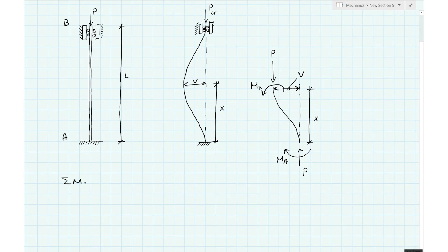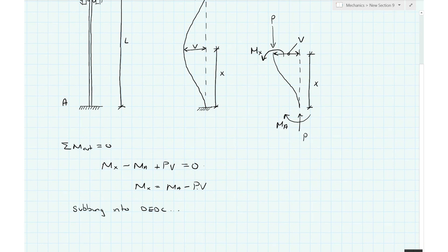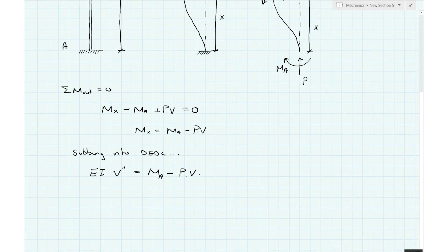So the first thing we want to do is determine an expression for the internal bending moment in the column. In order to do that, I will take the sum of the moments about the cut. I know that must equal zero. So in doing that, I have Mx minus Ma plus P times v must equal zero, and so that means that Mx must equal Ma minus Pv. We solve this straight into our differential equation and we end up with EI times v prime prime, second derivative of v, and that's equal to Ma minus P times v.